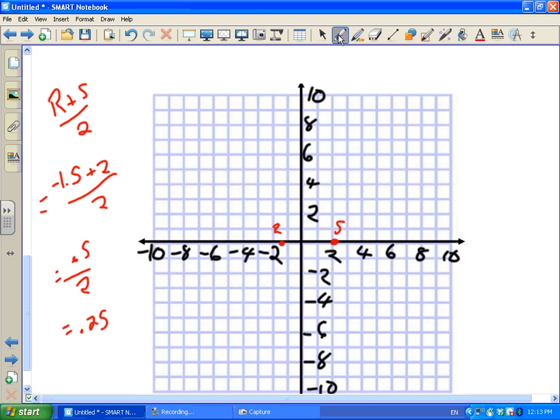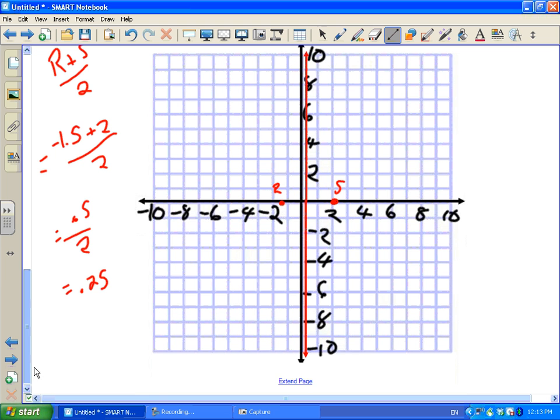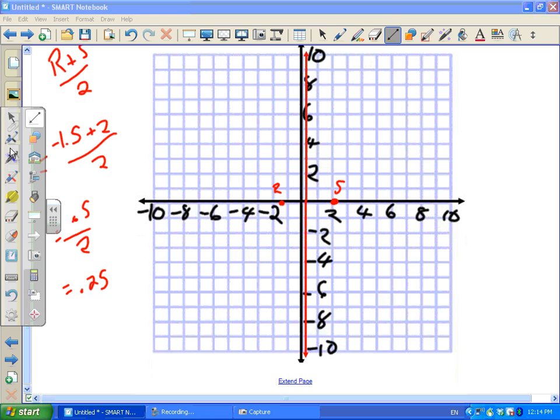So my axis of symmetry, this is a little harder to graph, is at 0.25. 0.25 is going to be there. Look at that. All right. I like that. That's just going to be good. So we have our axis of symmetry, and we know that our axis of symmetry is also the x-coordinate of the vertex.